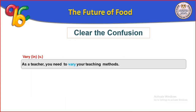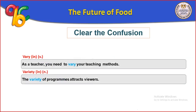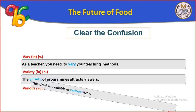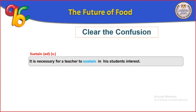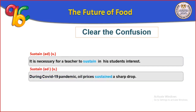Vary (يختلف) is a verb — as a teacher, you need to vary your teaching methods. Variety means اختلاف. Various means متنوع. Example: this drink is available in various sizes. Sustain (يستمر) — it is necessary for a teacher to sustain his students' interest. During the COVID-19 pandemic, oil prices sustained a sharp drop.